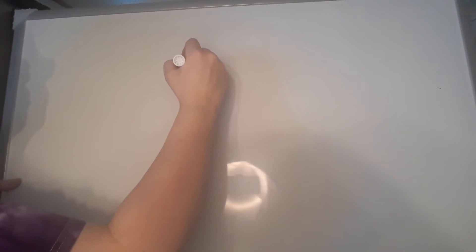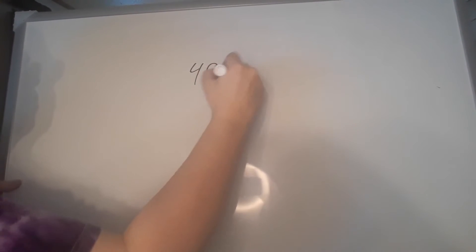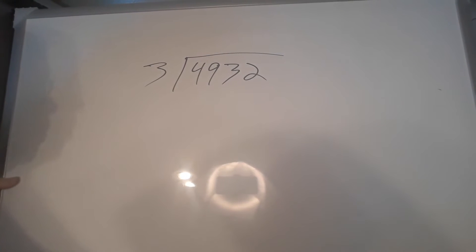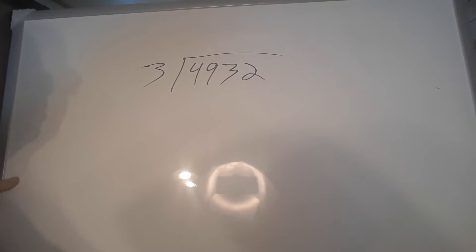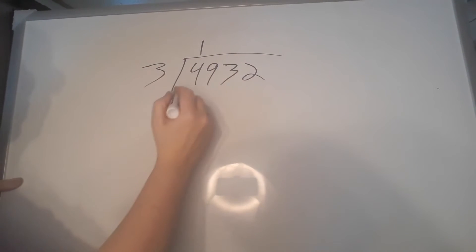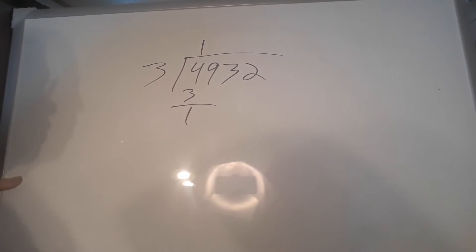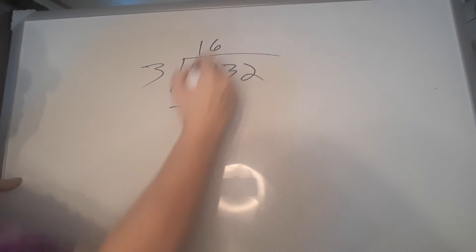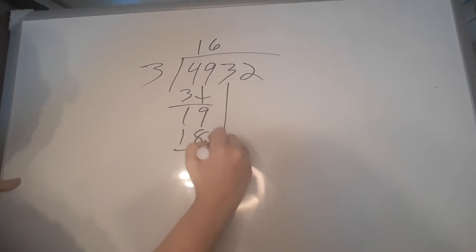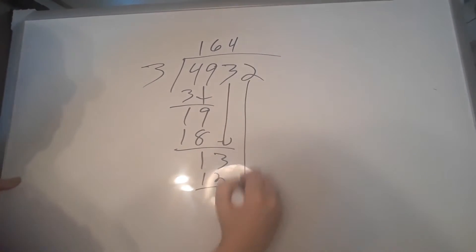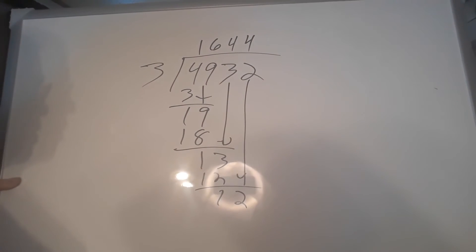Let's do one more: 4932 divided by 3. 4 divided by 3 is 1. We put the 1 over the 4, because that's where we're subtracting. The 9 comes down — 6 gives us 18 — then the 3 comes down — 4 gives us 12 — then the 2 comes down, and another 4. So the answer is 1644.